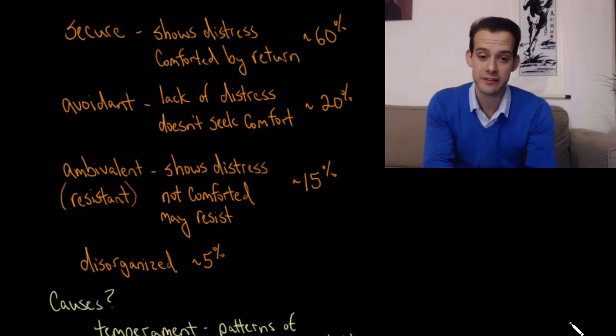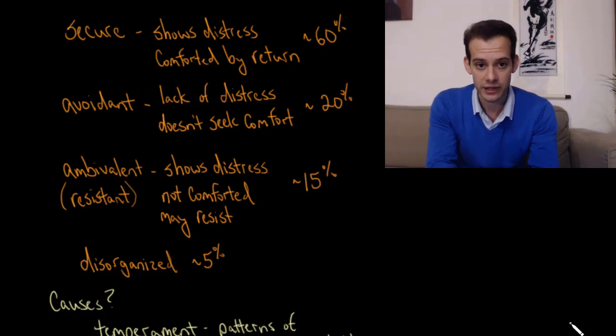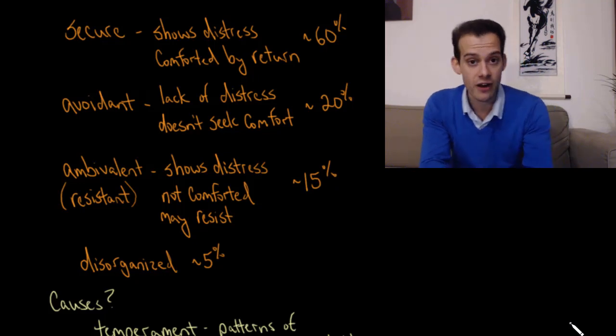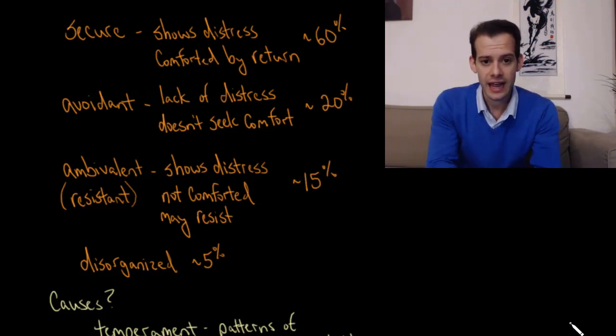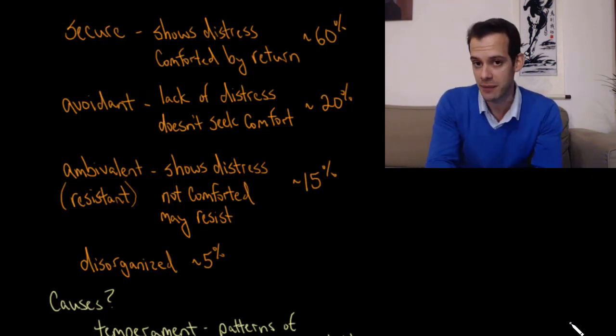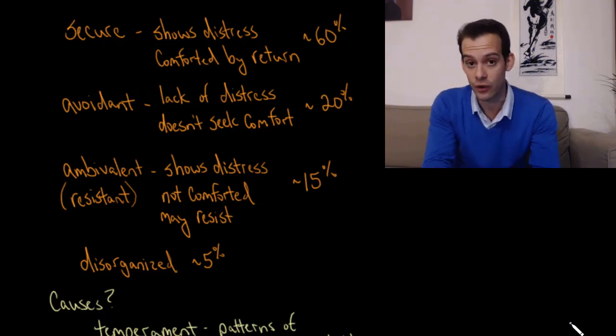She categorized the types of attachment into three main types. The first type is the secure attachment, found in about 60% of American children. What this means is that when the mother leaves, the child is distressed and upset. The mother has been this secure base for them to play and explore this new environment. When the mother leaves them alone or with a stranger, they show distress and often try to follow the mother out of the room as she starts to leave. When the mother returns a few minutes later, they're comforted by this. They might be crying the whole time she's gone, but then the mother comes back and the children are comforted. They stop crying, often run to the mother as soon as she comes into the room and embrace her. This shows a secure attachment with the mother.